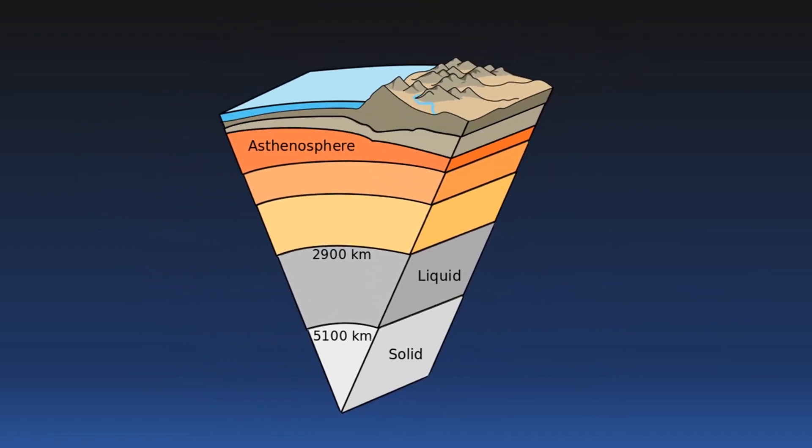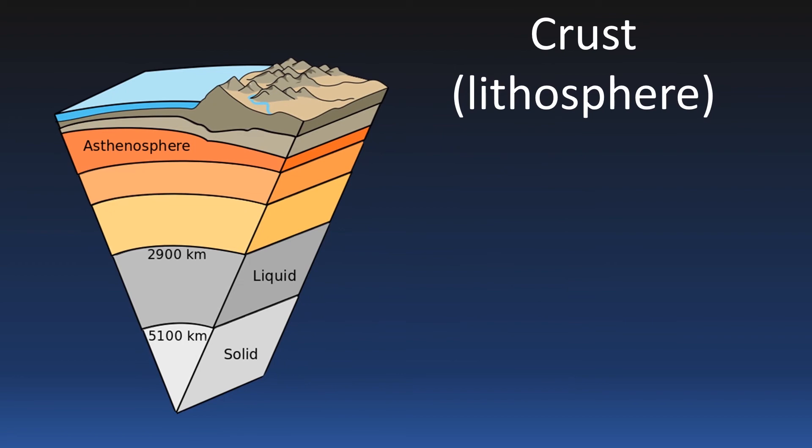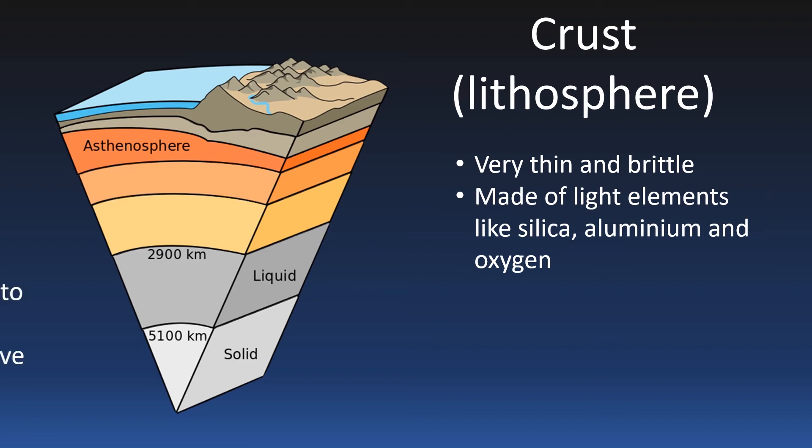The Earth's crust is like the shell of a hard-boiled egg. It is extremely thin, cold, and brittle compared to what lies beneath. The crust is made of relatively light elements, especially silica, aluminum, and oxygen. It also varies in thickness.